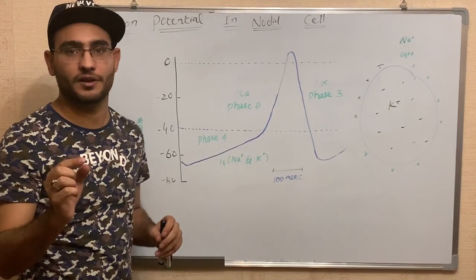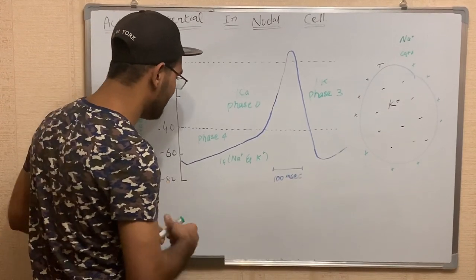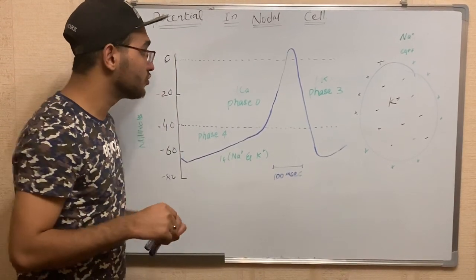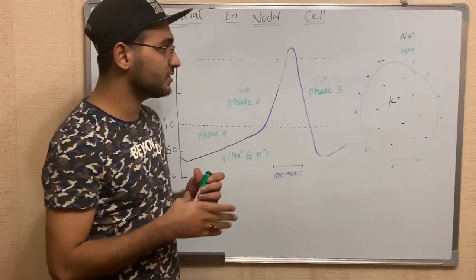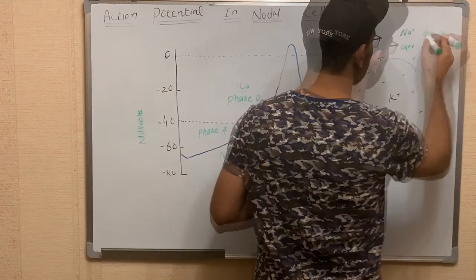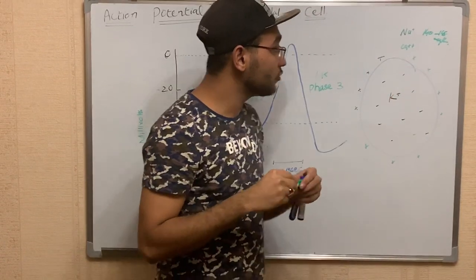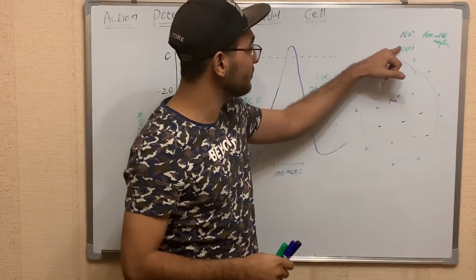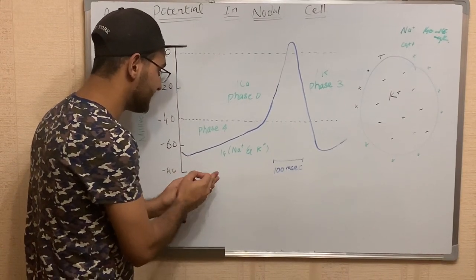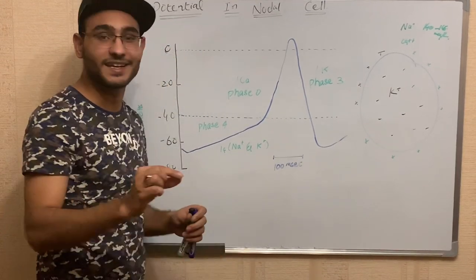At phase 4, the funny channels open. When the funny channels open, the entry of sodium and potassium occurs. Sodium is present in high concentration outside the cell, nearly about 140 to 145 milliequivalents per liter. Outside the cell, high concentrations of sodium and calcium are present. When the funny channels open, it causes influx of sodium in large amounts and influx of potassium in very little amount.